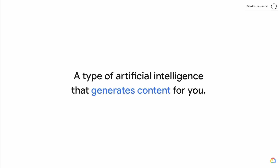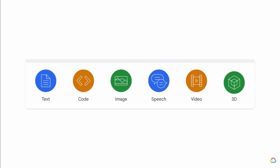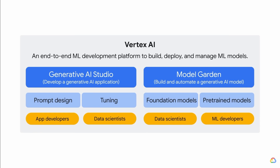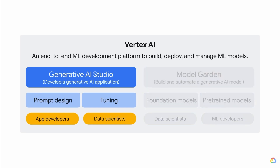What is generative AI? It is a type of artificial intelligence that generates content for you. The generative content can be multimodal, including text, images, audio, and video. When given a prompt or a request, generative AI can help you achieve various tasks such as document summarization, information extraction, and code generation. Vertex AI is an end-to-end ML development platform on Google Cloud that helps you build, deploy, and manage machine learning models. With Vertex AI, if you are an app developer or data scientist, you can use Generative AI Studio to quickly prototype and customize generative AI models with no code or low code.